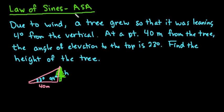Alright, so the situation is: due to wind, a tree grew so that it was leaning four degrees from the vertical, so it was not standing at a 90 degree angle. Instead it formed a 94 degree angle from the base of the tree to the top. At a point 40 meters from the tree, the angle of elevation to the top is 23 degrees. So this angle down here on the ground, the angle of elevation up to the top is 23 degrees, and we're going to find h, which is the height of the tree.